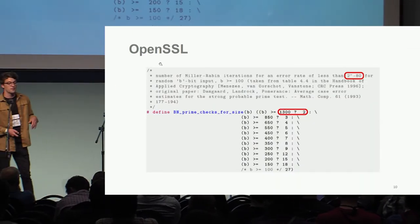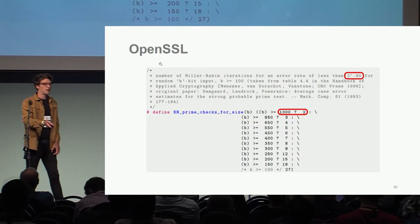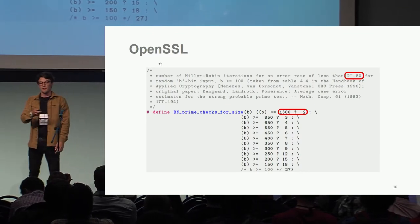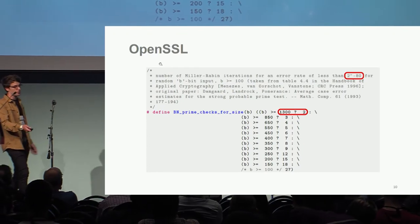OpenSSL actually gives us a function which takes the bit size of the number we want to test and determines the amount of rounds of testing needed to achieve an error rate of less than 2^-80. This is what happens by default. Of course, you can pick the amount of rounds of testing yourself if you want to.